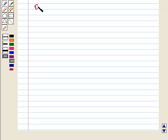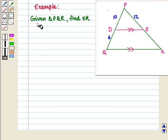Now, let us discuss an example. Given triangle PQR, find ER.